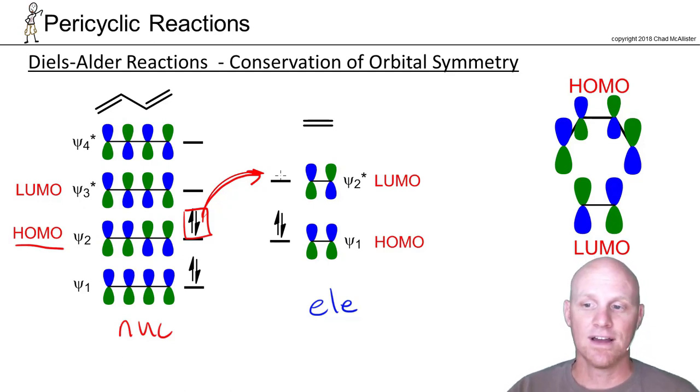The difference in energy here is related to the activation energy of this reaction, and we can use this to explain why donating groups on the diene are good and why withdrawing groups on the dienophile are good.